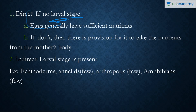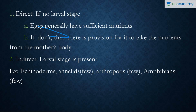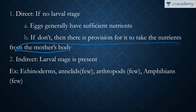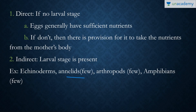In direct development, no larval stage is present because the eggs have sufficient nutrients and do not need to obtain nutrients from the mother's body. Oviparous organisms with sufficient nutrients in their eggs undergo direct development. In viviparous organisms, a structure called the placenta helps transfer nutrients from the mother. Indirect development, where a larval stage is present, is seen in Echinoderms, some Annelids, some Arthropods, and some Amphibians.